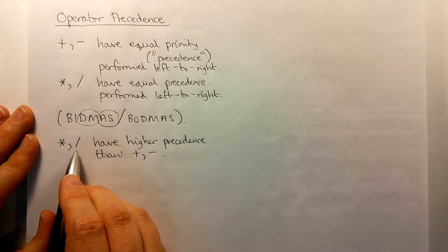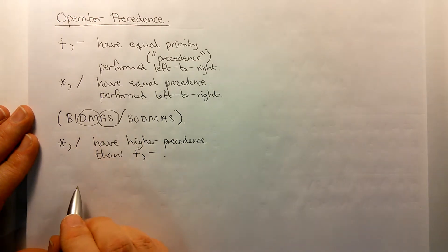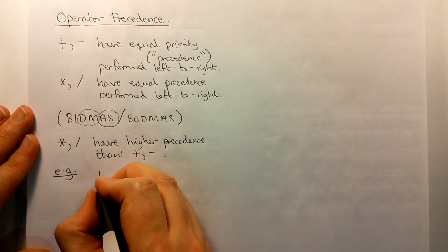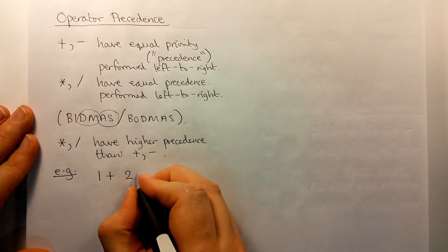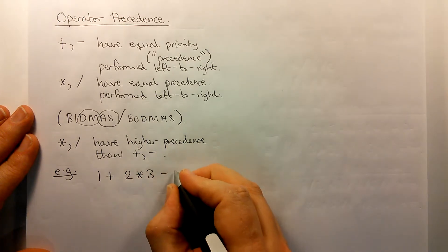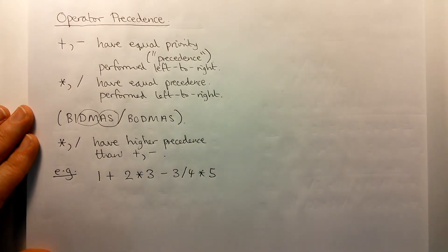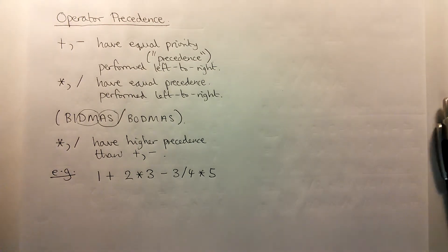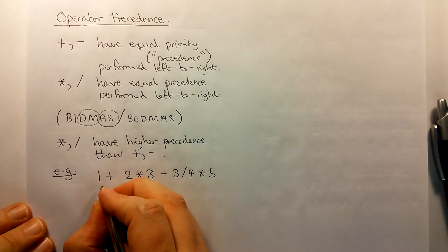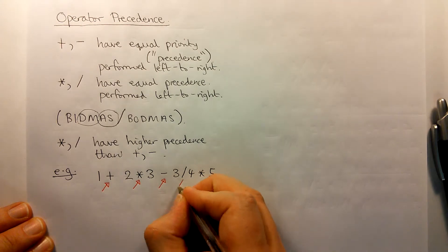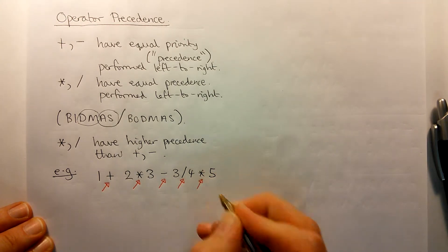So let's write down a couple of expressions here and add in some bracketing to demonstrate the order of operations. So suppose we have the expression shown here. Let's try to figure out what order the operations should be done in. Well, the first thing to do is to identify all of the operators. So I'm going to put an arrow to each operator. There's an addition, a multiplication, subtraction, division, and another multiplication.